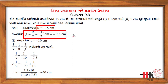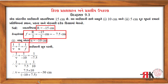વક્રતા ત્રિજ્યા (radius of curvature) ના અડધું F મળ્યું. વસ્તુ અંતર u = -10, F = -7.5 cm. ચાલો ગૌસ સૂત્ર મૂકી દો. V ની કિંમત = -30 cm મળે છે.